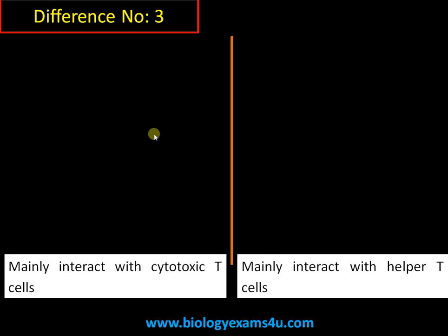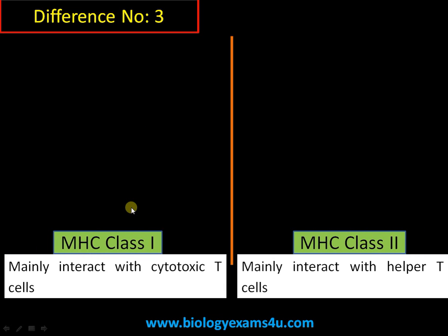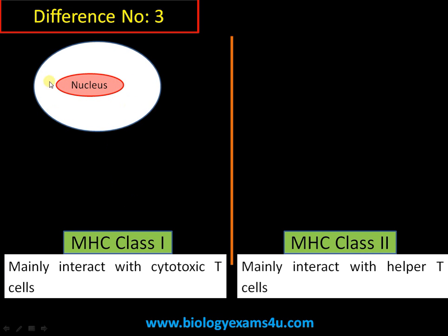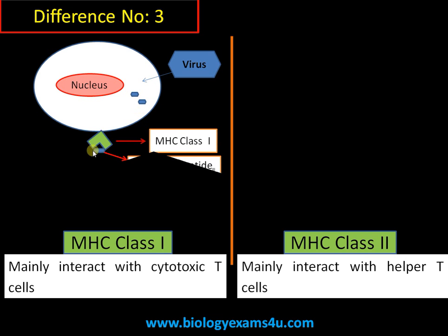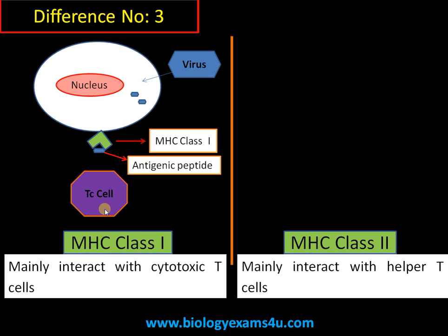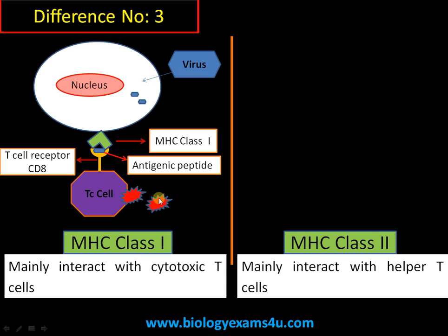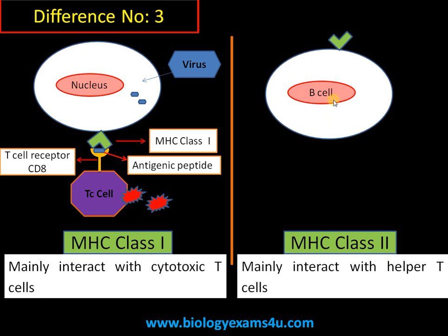Difference number three is regarding interaction with other immune cells. MHC class 1 interacts mainly with cytotoxic T cells, which are responsible for cell-mediated immunity. When a virus enters a nucleated cell, it is degraded into antigenic peptides, which are then presented on MHC class 1. Cytotoxic T cells have a CD8 receptor that recognizes MHC class 1-bound antigenic peptide, triggering the proliferation of cytotoxic T cells involved in cell-mediated immunity.